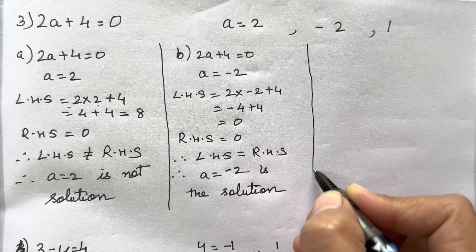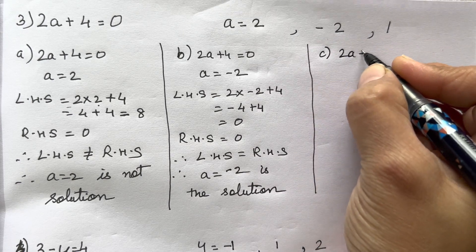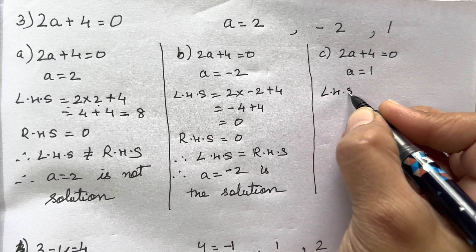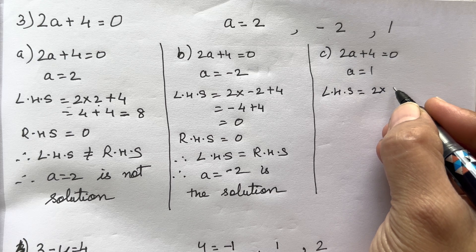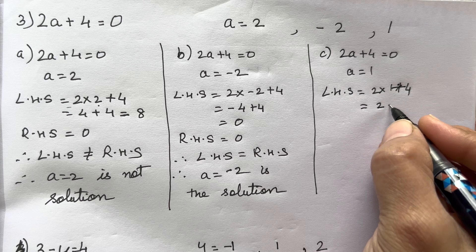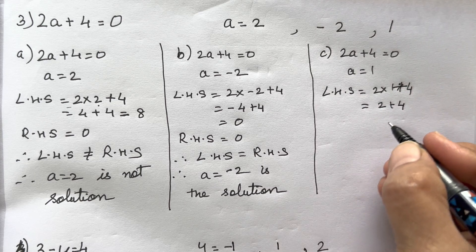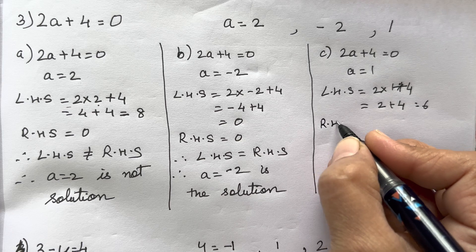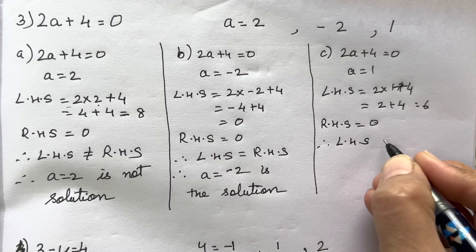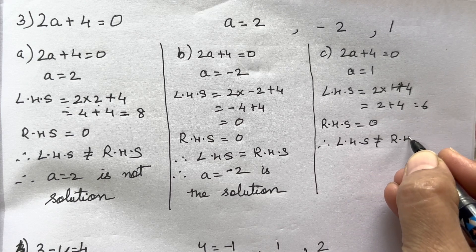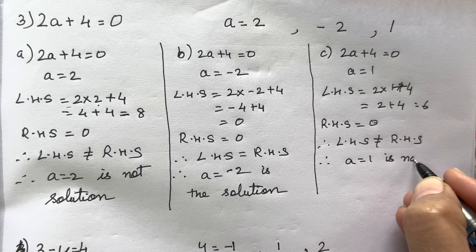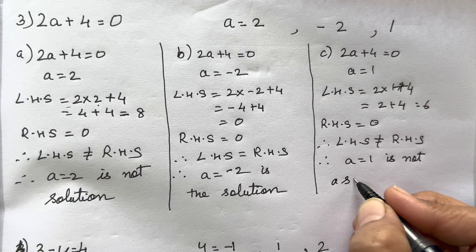Next is part c: 2a + 4 = 0 with a = 1. Left Hand Side is 2 × 1 + 4 = 2 + 4 = 6. Right Hand Side is 0. Both numbers are different, so Left Hand Side is not equal to Right Hand Side. Therefore a = 1 is not a solution.